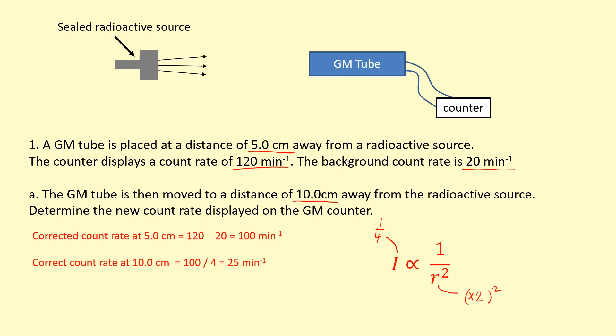But the question is actually asking for the new count rate displayed on the GM counter. The GM counter is still going to pick up the background radiation, so we need to add that back on to give the actual reading given by the detector.